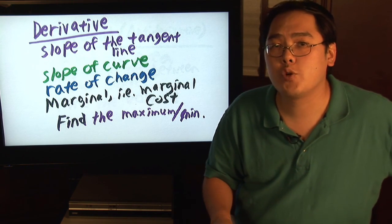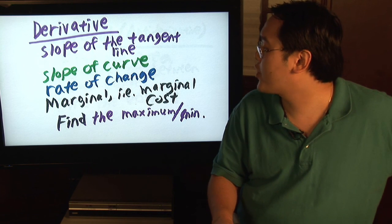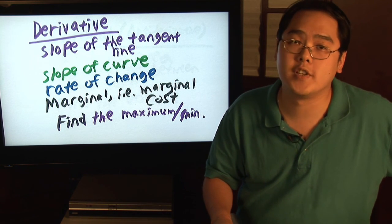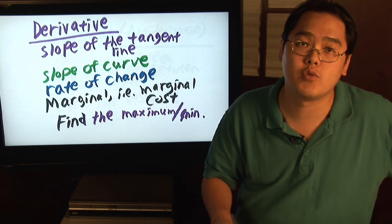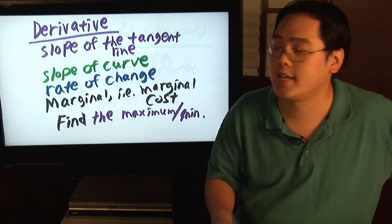If they want you to find the slope of the tangent line, the slope of the curve, those two are synonymous with finding the derivative because part of the definition of the derivative is finding the slope of the tangent line.